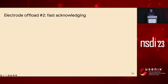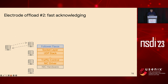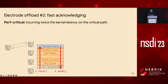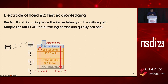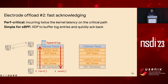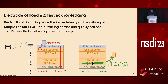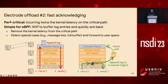After preparation broadcasting, the Paxos follower will log messages and acknowledge back to the leader. This is performance-critical because the follower needs to receive and send one message for each log append operation on the critical path, meaning twice the kernel latency on the Paxos critical path. Instead, Electrode does fast acknowledging in XDP. It uses the XDP hook to buffer log entries in the driver layer and quickly acknowledge back. After receiving the preparation message, the eBPF program at XDP appends the log entry to an in-kernel ring buffer and immediately sends back the ACK message, removing kernel latency from the critical path. Meanwhile, the user-space Paxos program asynchronously pulls log entries in batches, hiding the kernel context-switching overhead. The eBPF program also detects special cases such as message loss and ring buffer full, forwarding those to user space to handle.